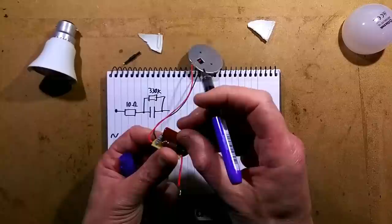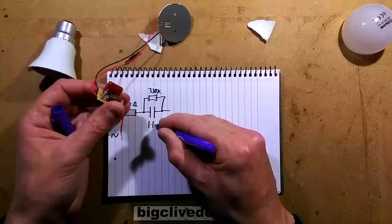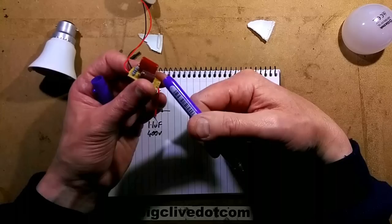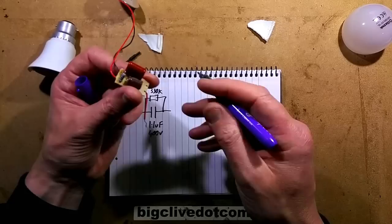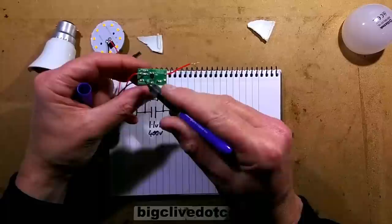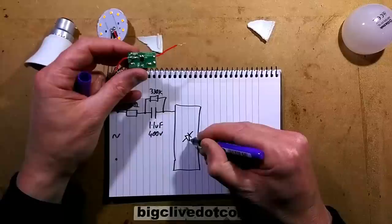The capacitor is 1.15, that's a 1.1 microfarad, quite an odd value, 400 volt. I wonder if that's a specific value for LED lamps that they've increased the resolution, so to speak, to allow for finer tuning of wattages. Then we've got the other connection that's going straight to the bridge rectifier as is the capacitor.